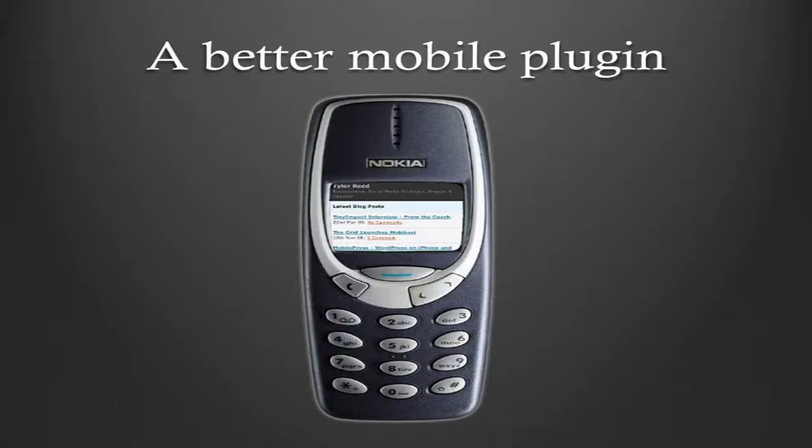We built MobilePress with a few key features - this image is actually a joke, we didn't develop a 3310 color interface. The key features we wanted were lower-end device support, custom themes so people could create a theme for an iPhone, BlackBerry, Windows Mobile, and lower-end devices - displaying different themes for different devices. We wanted to give people the ability to create their own theme, which a lot of the other plugins weren't doing at the time.